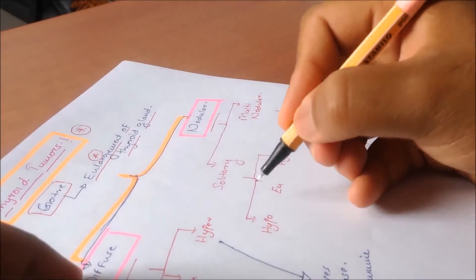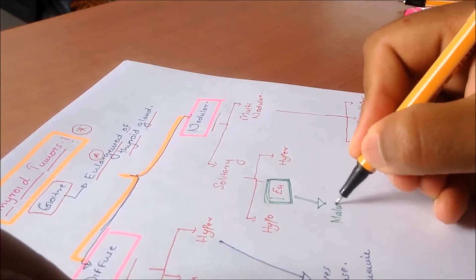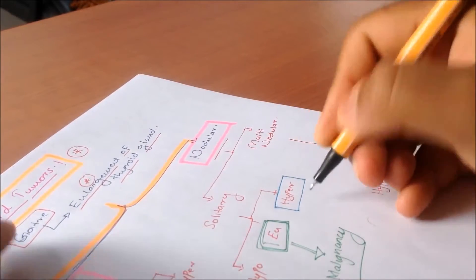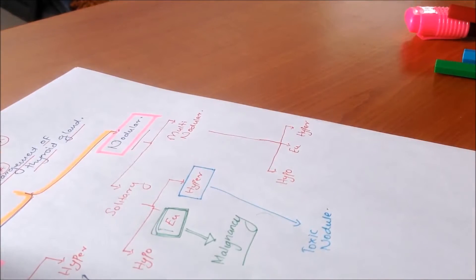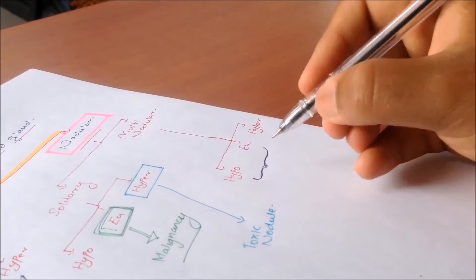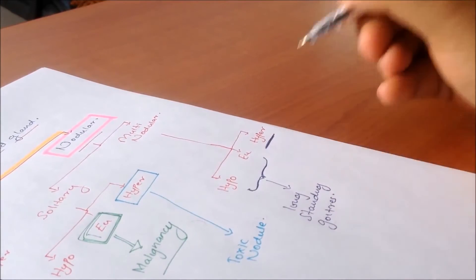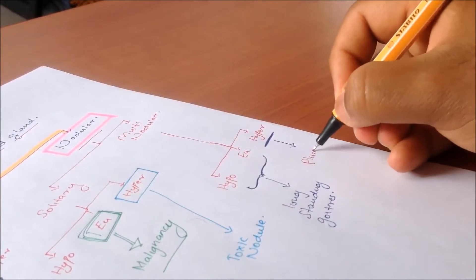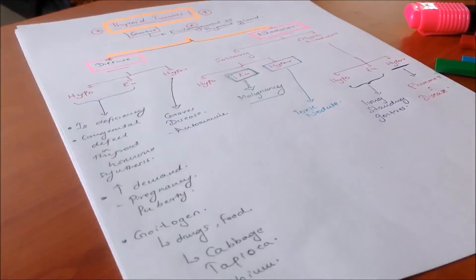When talking about solitary nodules with euthyroid function, you always have to exclude malignancies. Malignancies are always solitary nodules which are euthyroid. If you see a solitary nodule which is hyperthyroid in function, it's always a toxic nodule. Multinodular goiters that are hypothyroid or euthyroid are the common long-standing multinodular goiters. Multinodular goiters which are hyperthyroid are associated with Plummer's disease, discussed in a different lecture.